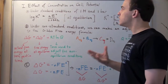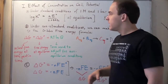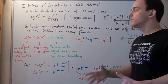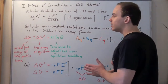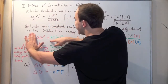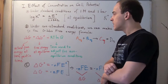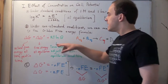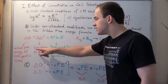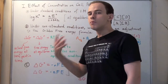To begin adjusting for the new relationship between concentration and cell potential, let's look at Gibbs free energy. Under non-standard state conditions, we can make an adjustment to the Gibbs free energy formula. Before, under standard state conditions, our formula was simply ΔG° equals negative nFE°. But now we are not under standard state conditions, so we must make that adjustment by adding the RT ln Q term, which adjusts for non-equilibrium and non-standard state conditions.